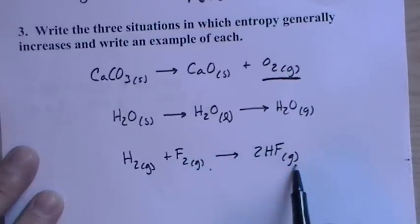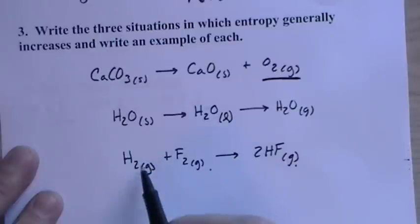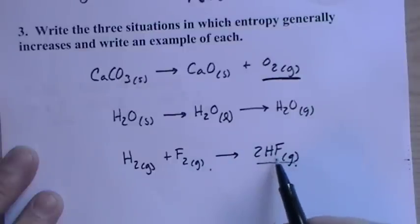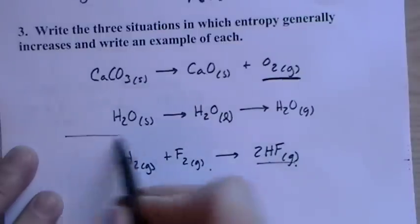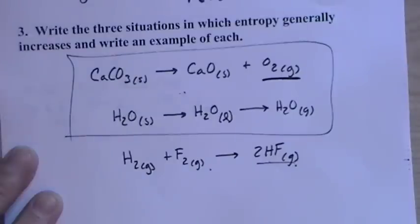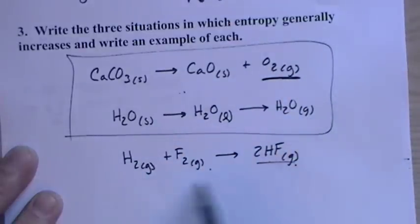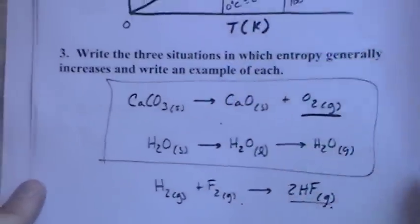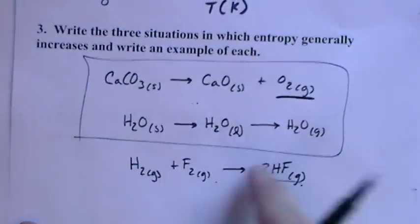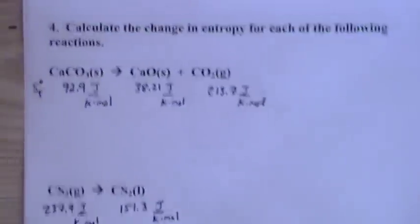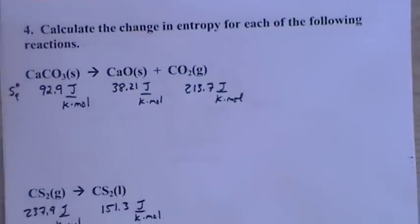Here's a more subtle example: two gases where hydrogens are together and fluorines are together. By mixing them we get two gas molecules each with two different atoms — that's more random, so entropy increases. Of course, if any of these reactions go in the opposite direction, there would be a decrease in entropy.